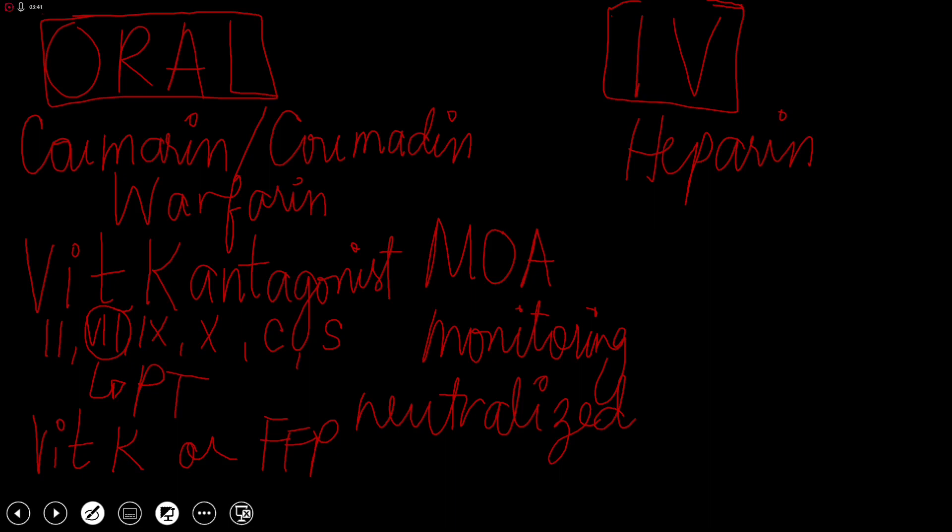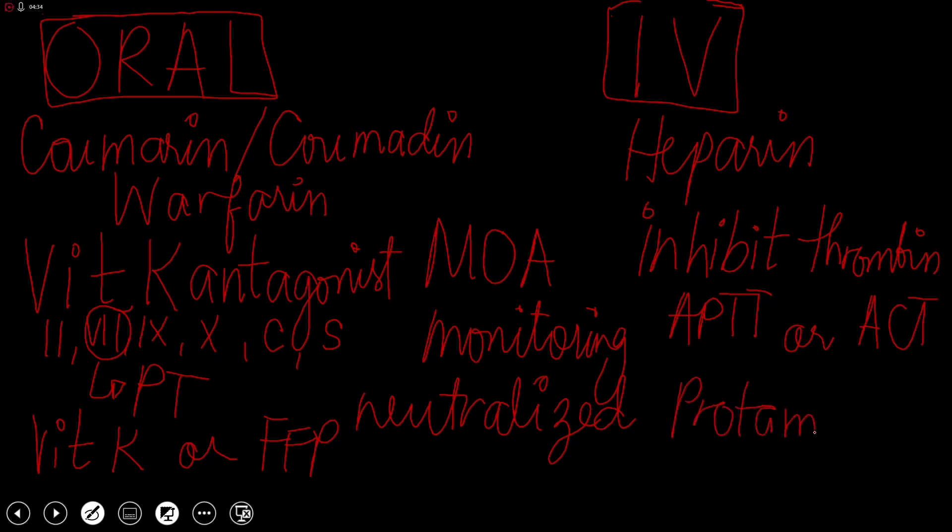The other group of anticoagulants are intravenous anticoagulants, represented by heparin. Heparin's mode of action is to inhibit thrombin. It's an antithrombin anticoagulant. For monitoring, we have two tests to remember. In a laboratory, we test it using APTT, activated partial thromboplastin time. But bedside patients can use ACT or activated clotting time, which is a point-of-care assay. For overdose, we can use protamine sulfate for neutralization.